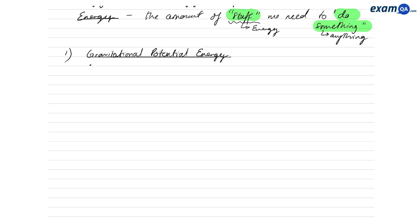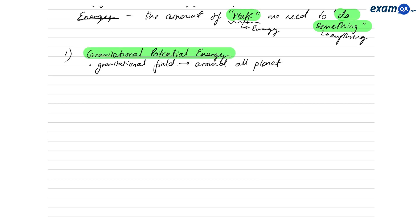It applies to anything in a gravitational field. A gravitational field exists around all planets — our Earth, the Moon, the Sun all have gravitational fields. Any object near a planet will have some gravitational potential energy.